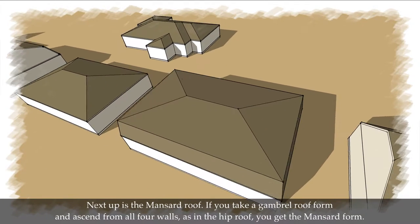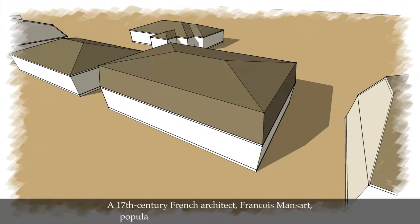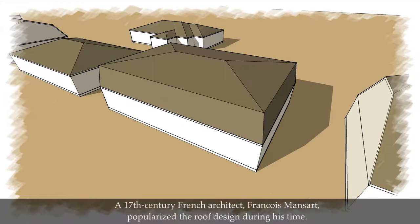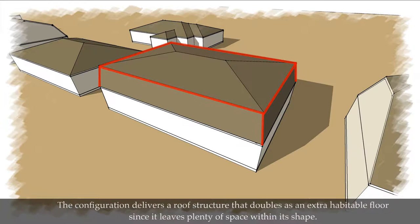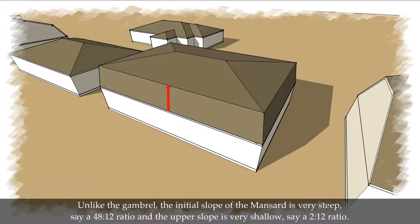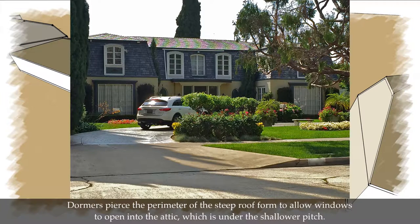Next up is the mansard roof. If you take a gambrel roof form and ascend from all four walls, as in the hip roof, you get the mansard form. A 17th century French architect, Francois Mansard, popularized the roof design during his time. The configuration delivers a roof structure that doubles as an extra habitable floor, since it leaves plenty of space within its shape. Unlike the gambrel, the initial slope of the mansard is very steep, say a 48 to 12 ratio, and the upper slope is very shallow, say a 2 to 12 ratio. Dormers pierce the perimeter of the steep roof form to allow windows to open into the attic, which is under the shallower pitch.